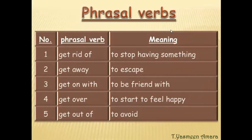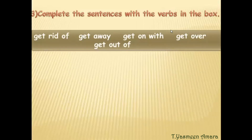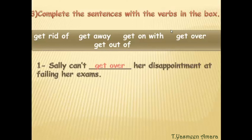Now we will talk about phrasal verbs. This table contains phrasal verbs and their meanings — memorize them to fill in the blanks correctly. Number one: 'get rid of' — to stop having something. Number two: 'get away' — to escape. Number three: 'get on with' — to be friends with. Number four: 'get over' — to start to feel happy. Number five: 'get out of' — to avoid. Question three: complete the sentences with the phrasal verbs in the box. These are the correct answers.